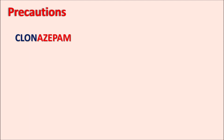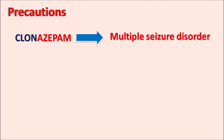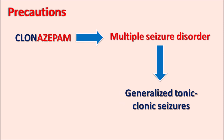Now let us see the precautions of Clonazepam. Although Clonazepam can be used for myoclonic seizures, Lennox-Gastaut syndrome, and atonic seizures, when prescribed in patients with multiple seizure disorders, a few patients may develop generalized tonic-clonic seizures or absence seizures. In such cases, Clonazepam may precipitate generalized tonic-clonic seizures. That is why this drug should only be used in those with myoclonic, akinetic seizures, or Lennox-Gastaut syndrome. For other multiple seizure disorders, alternative drugs like valproate should be used.